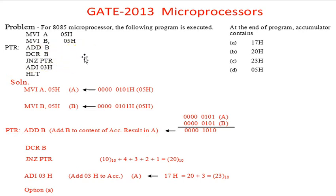It executes a loop in assembly language, so we have taken it here for illustration. For 8085 microprocessor, the following program is executed: MVI A, 05H; MVI B, 05H; ADD B PTR; DCR B; JNZ PTR; ADI 03H; HLT.